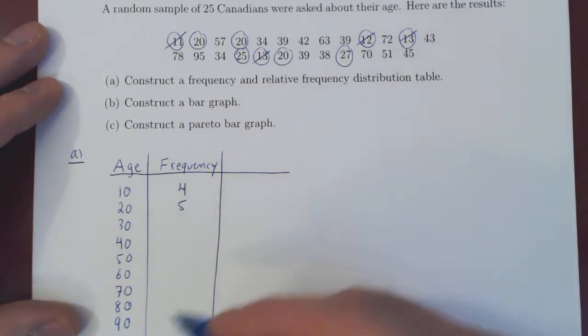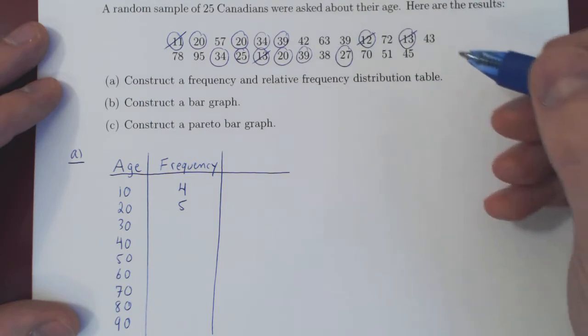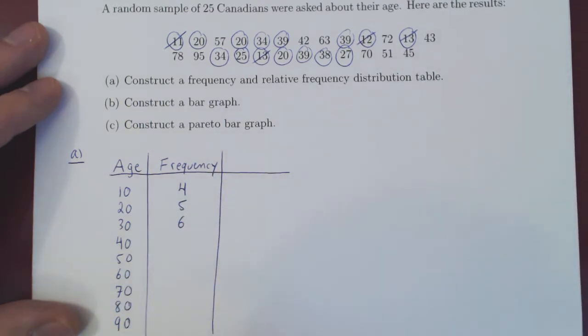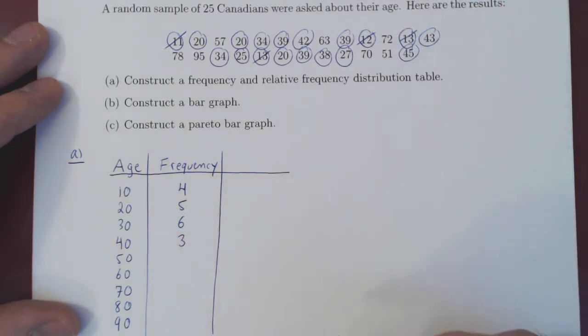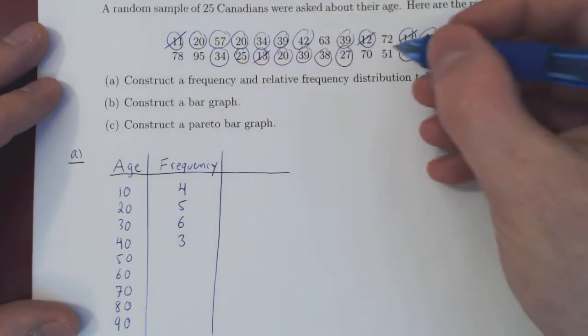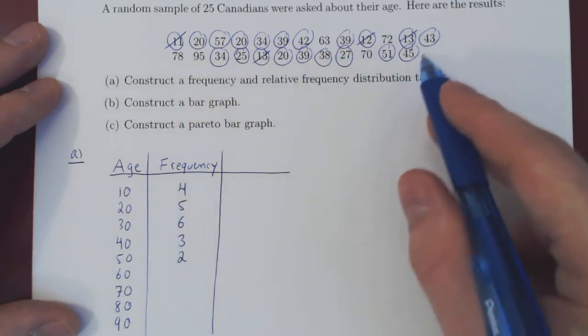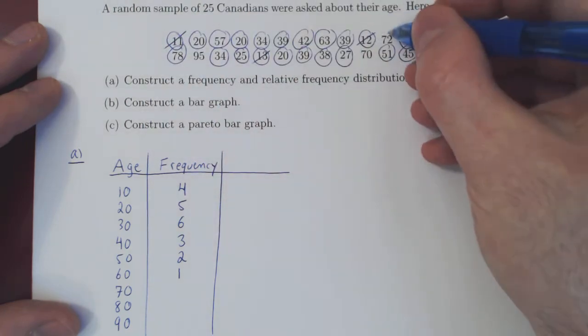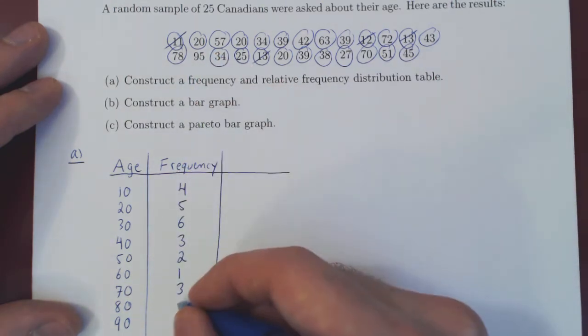How many people are in their 30s? One, two, three, four, five, six. Six in total. How many people were in their 40s? One, two, and three. So three people in their 40s. How many people in their 50s? One, two. How many people in their 60s? Only one. One, two, and three. Well, we're left with one value. So that person is in his or her 90s. So zero people in their 80s. One person in their 90s.